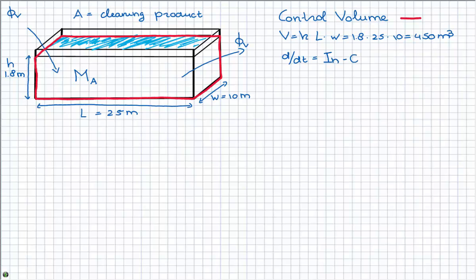Now, the general balance equation, you all know already how this looks like. Then, when we fill this in, I get the mass of cleaning product over time is in minus out plus production.